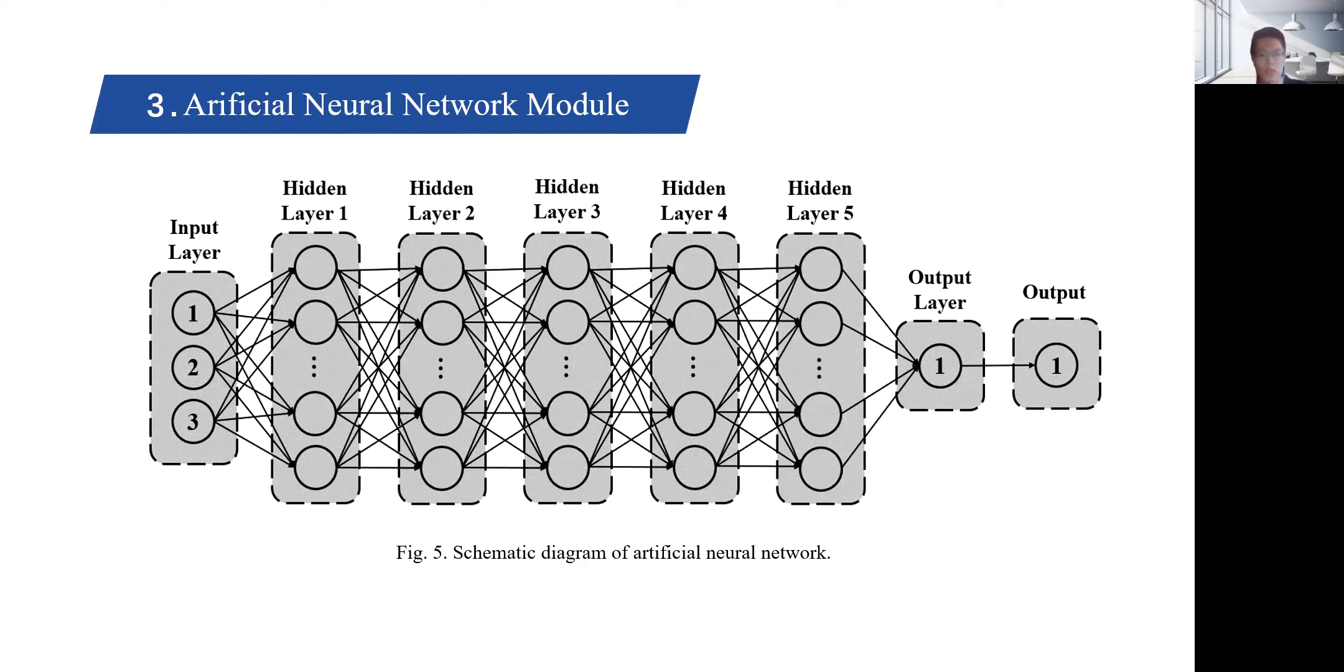To solve the above problems, we choose a fully connected neural network of the multilayer perception type to establish the mapping relationship between pulses and their stable values under different force levels, thus improving the efficiency and accuracy of human-machine interaction.